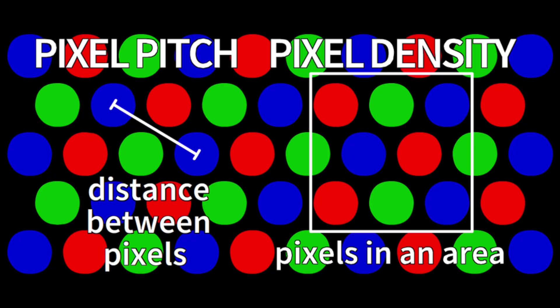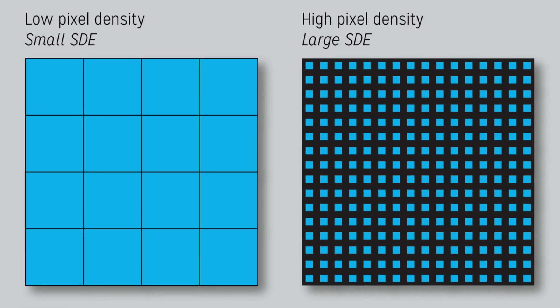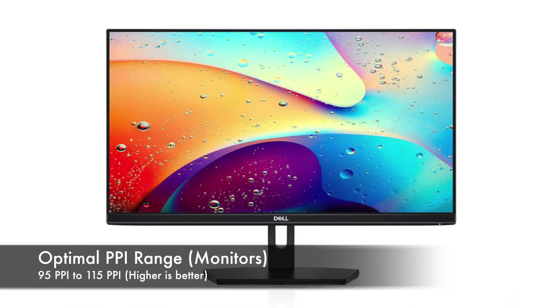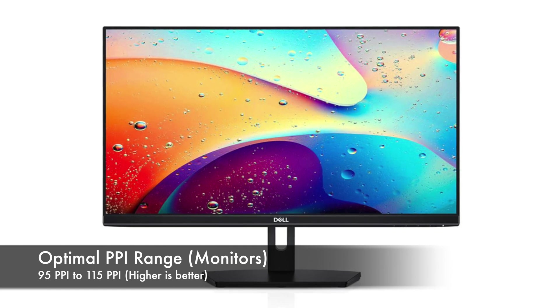Now, let's say we get a much larger display. This basically means the pixels are more spread out, so the pixel density will drop given we use the exact same resolutions. So let's say we have a 32-inch display with a Full HD rating — this only has 69 PPI. A 1440p display will have 81 PPI, and a 4K display will now have 138 PPI. As you can see, the PPI rating dropped across the board. However, without context this doesn't make any sense. While there is no golden number, most of the industry agrees the optimal range in terms of PPI for your eyes to observe is between 95 to 115 PPI.